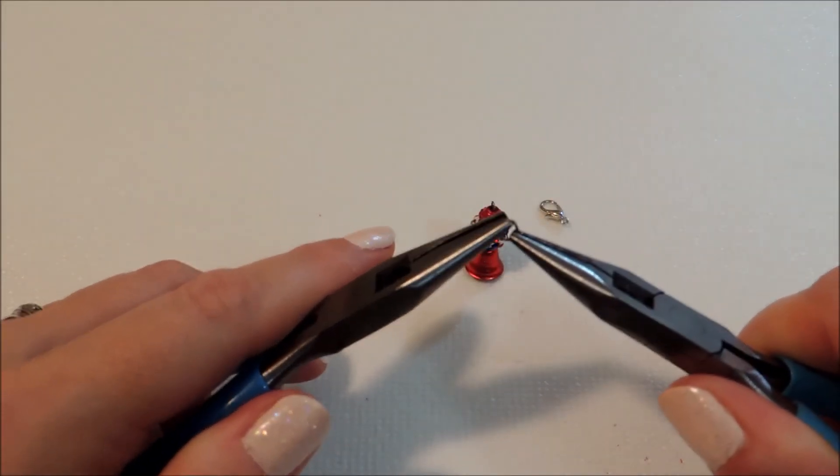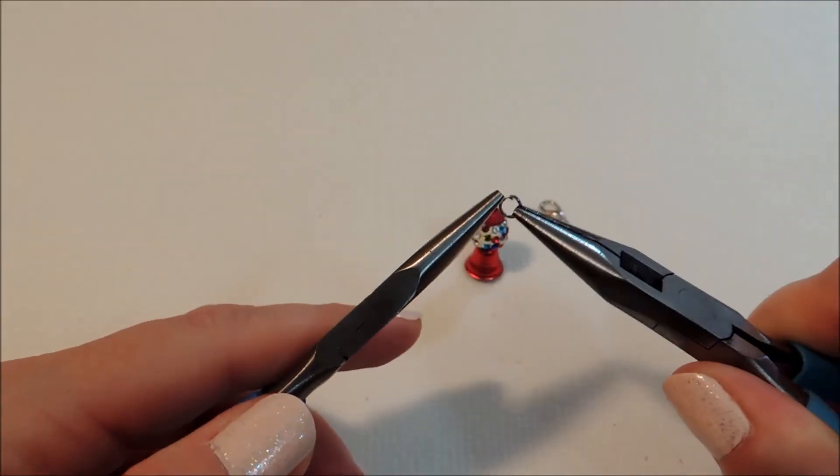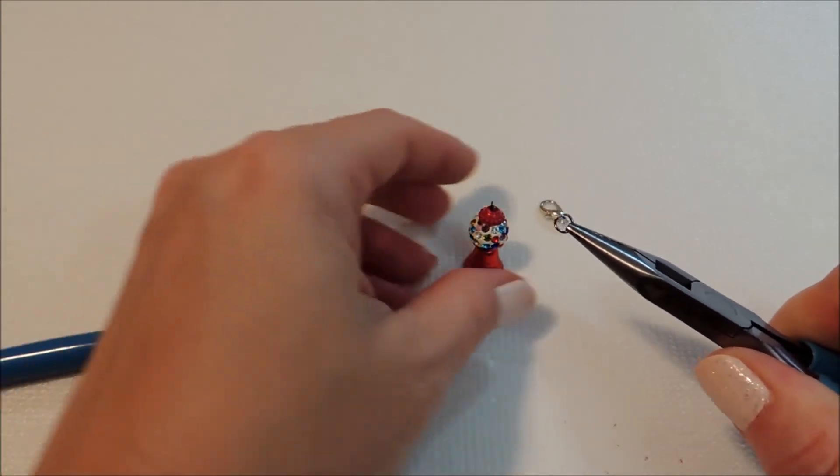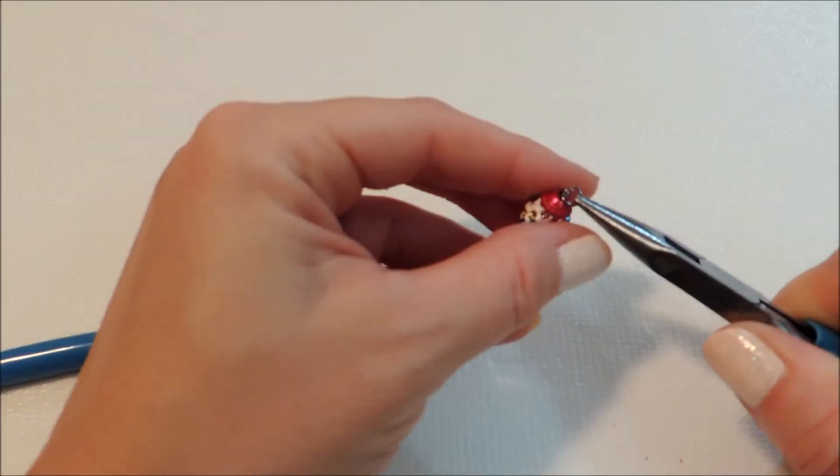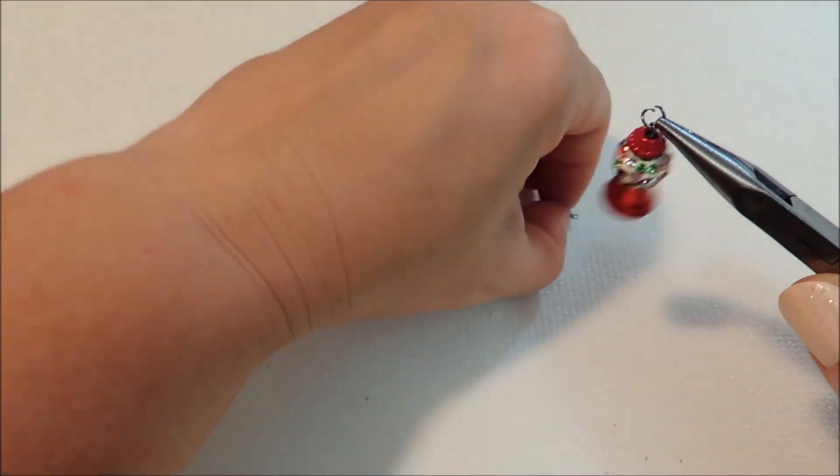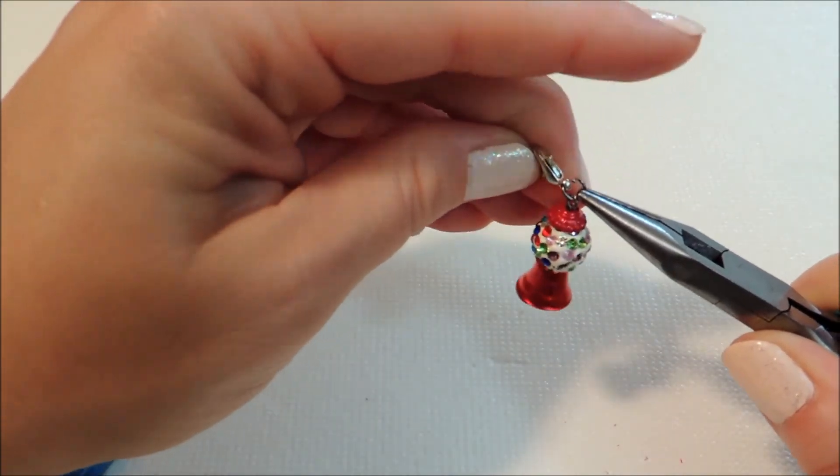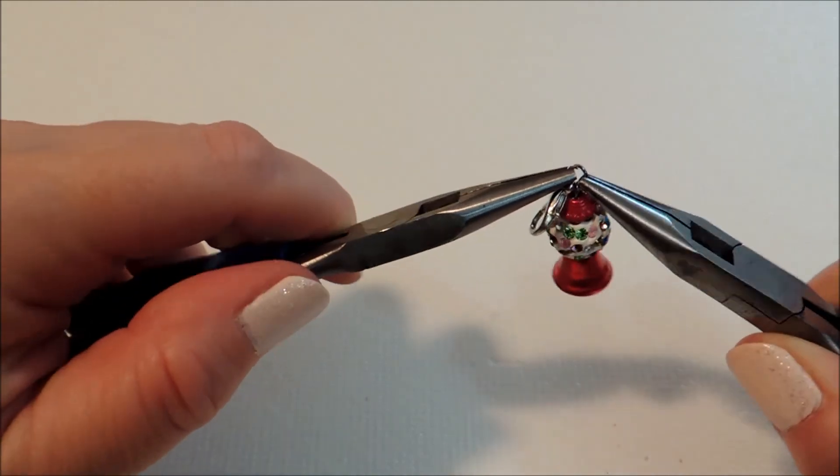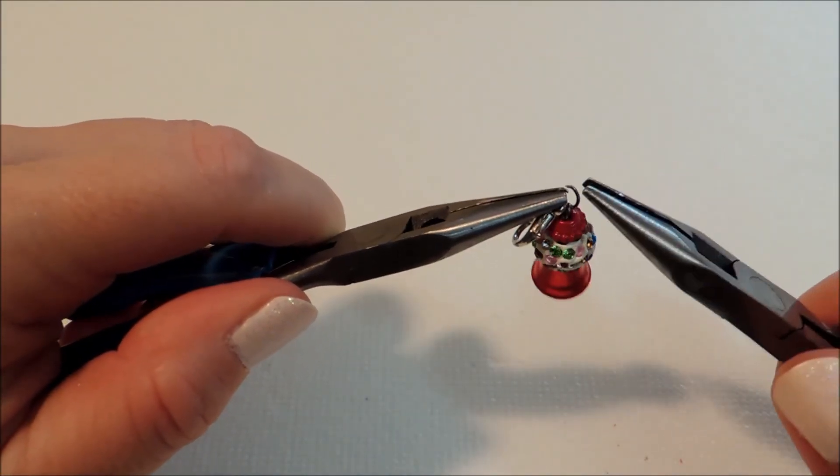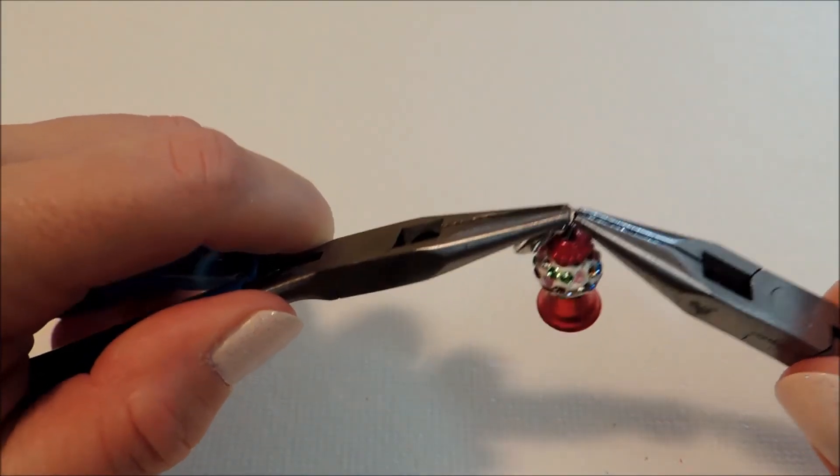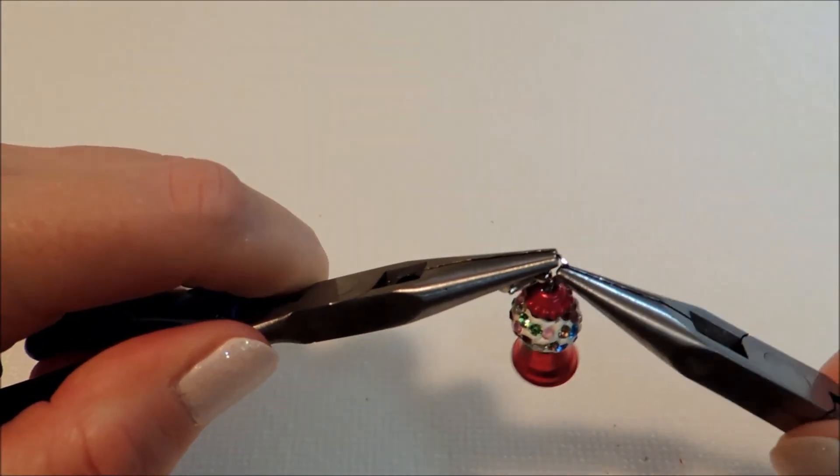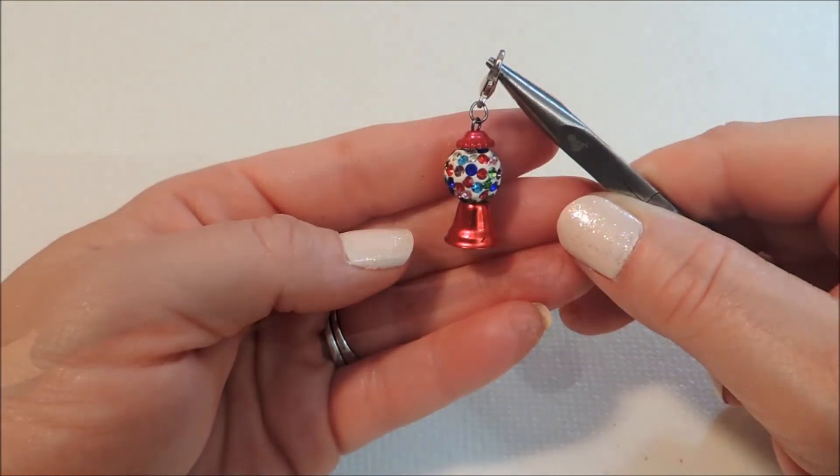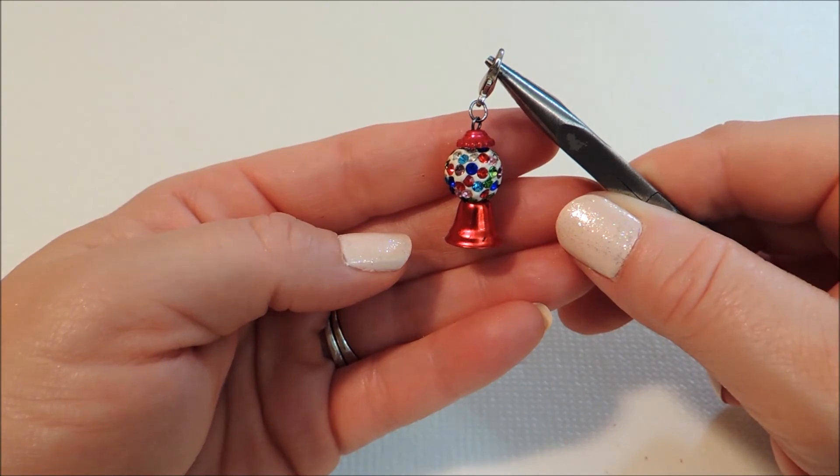Then just open that up, add our gumball machine and our lobster clasp, and close that back up. And there you have a gumball machine.